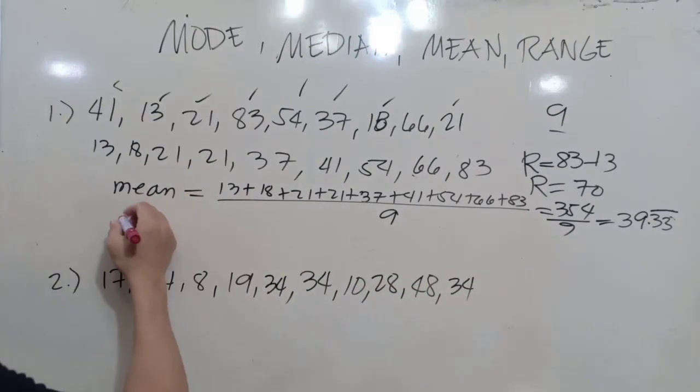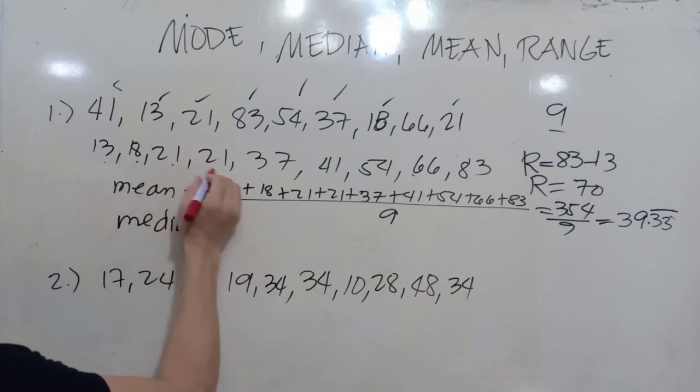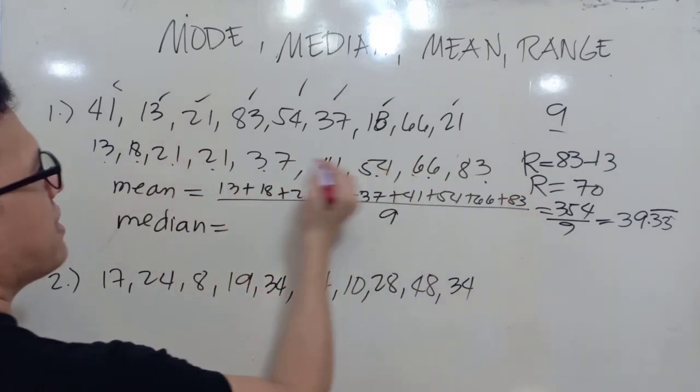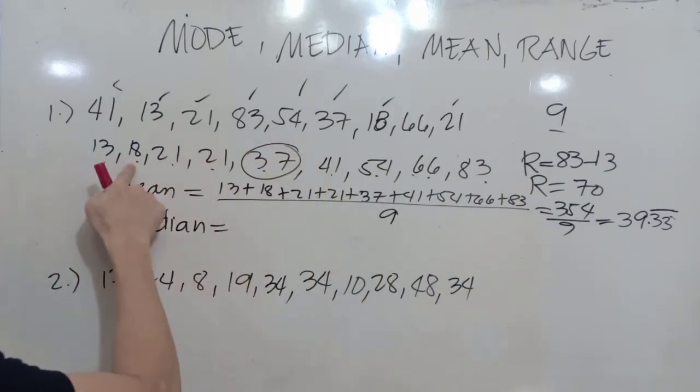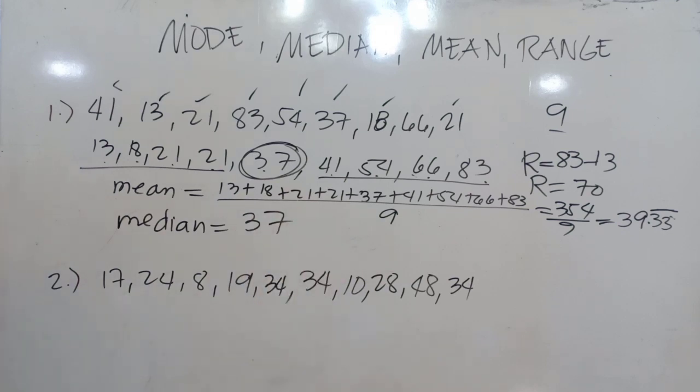How about our median? The median is equal to the middlemost. 1, 2, 3, 4, 5, 6, 7, 8, 9. Middlemost is here, the fifth. 1, 2, 3, 4. From here to here is 4, and 4 data there. So that means this is our middlemost. This is our median: 37.